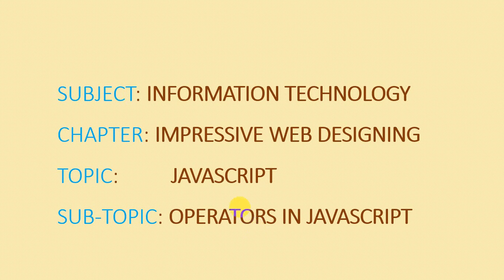We are going to start a new topic: operators in JavaScript. What are operators? An operator is a symbol which is used to perform certain operations. Operators are nothing but certain symbols used to perform certain arithmetic operations. For example, if you want to perform addition, you have two values, value X and value Y. In between these two values you need a symbol that decides what operation you are going to perform. For addition we have a special symbol, for multiplication a special symbol, for division a special symbol — these symbols are called operators.